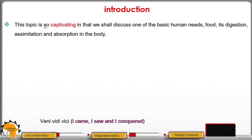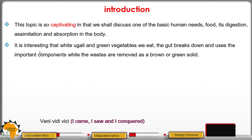This topic is captivating in that we shall discuss one of the basic human needs — that is food — including digestion, assimilation, and absorption in the body. It is interesting that food like white ugali and green vegetables we eat: the gut breaks down and uses the important components of that food, while the wastes are removed as either a brown solid or a green solid, normally called the feces.